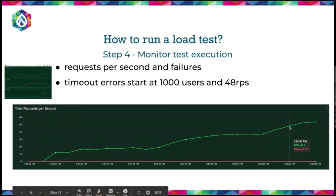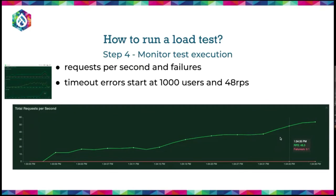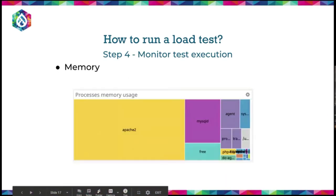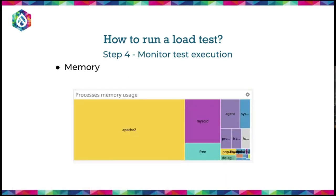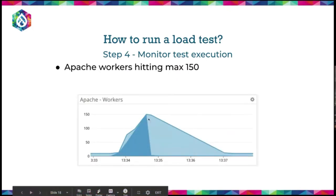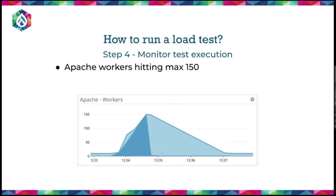You can see errors appearing as tests run for extended periods — here we see 'out of connections' and then connection timeouts. On the server side, CPU hit 100% and Apache began consuming all available memory. Apache workers also hit the maximum of 150, creating a throttle — these are the bottlenecks on this particular server.